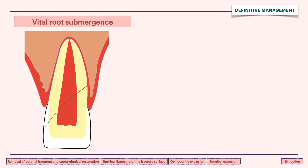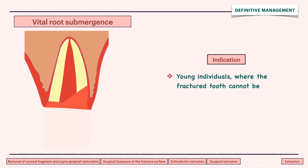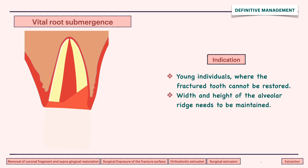In vital root submergence, the supra-alveolar fragment of the tooth are removed while the root portion is kept in place and covered with a surgical flap. This is indicated in young individuals where the fractured tooth cannot be restored and the width and height of the alveolar ridge needs to be maintained.